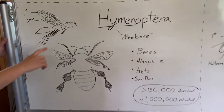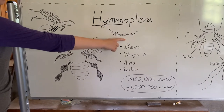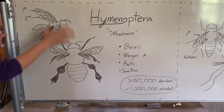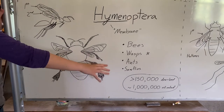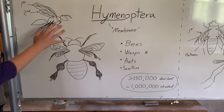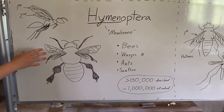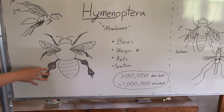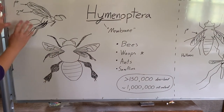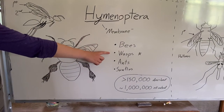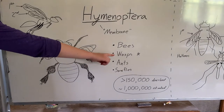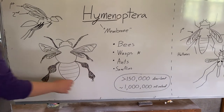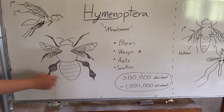The fourth order is Hymenoptera. Hymen means membranous, and just like the beetle's second wing, both wings of Hymenoptera are membranous. These are the bees, wasps, ants, and sawflies. The name sawfly might be somewhat misleading — they're not actually flies; they're in the group with wasps and bees. This order actually includes the smallest known insect, which is a very tiny fairy fly — which is actually a wasp — and it's less than one millimeter long. This order has over 150,000 described species.